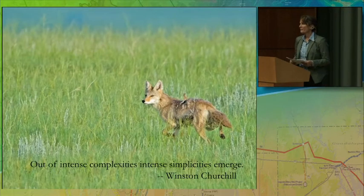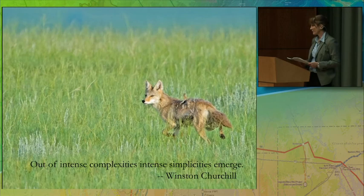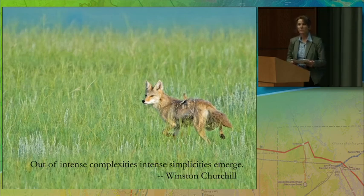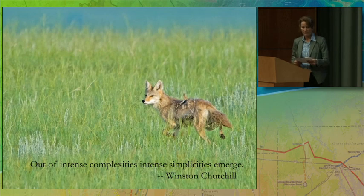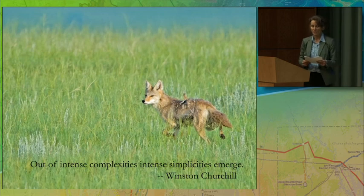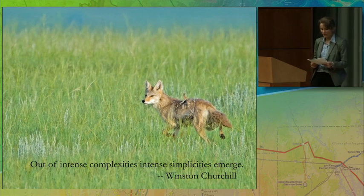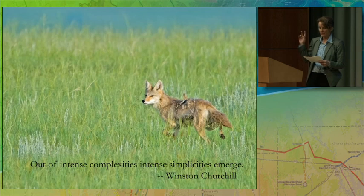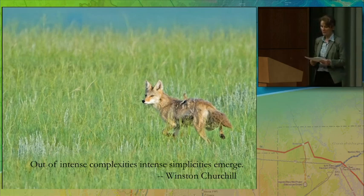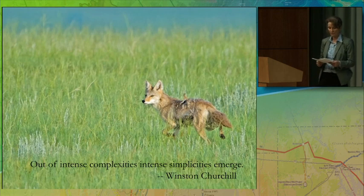Remember that animals are information aggregators — they tell us directly about ecosystem quality. So we build models around animals and their continued population presence; it's the most efficient way to understand ecosystem integrity. Animals provide the fundamental controls on the systems they inhabit. Our dominant cultural narrative portrays animals as decorations on the landscape, but recent research shows us how integral they are to knitting together the fabric of the systems we rely on.